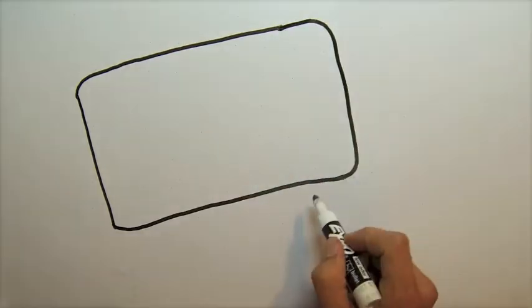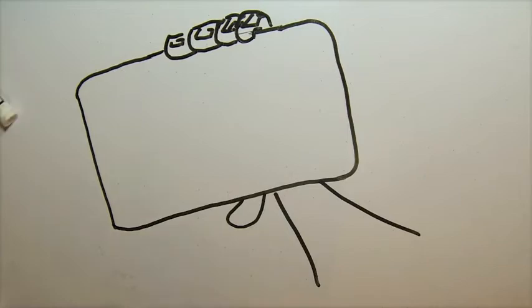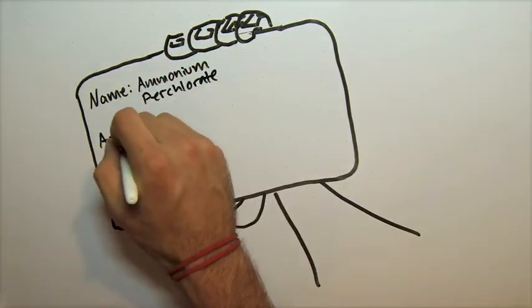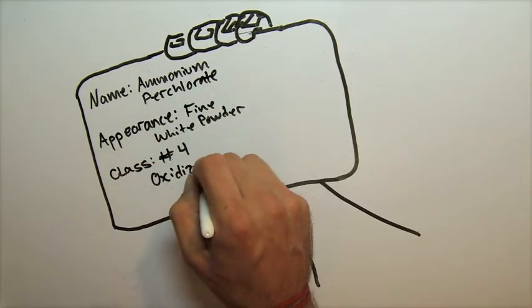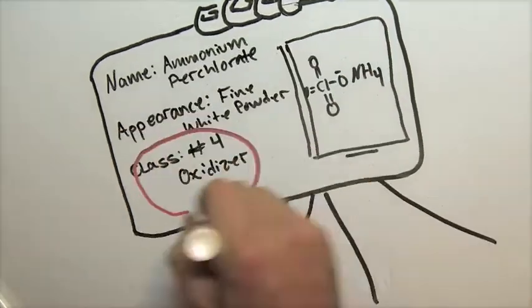In order to start your training, it is important to identify and become familiar with the chemical being worked with. Here we have ammonium perchlorate. It has an appearance of a fine white powder and has a class 4 oxidizer. We will take a further look into this.